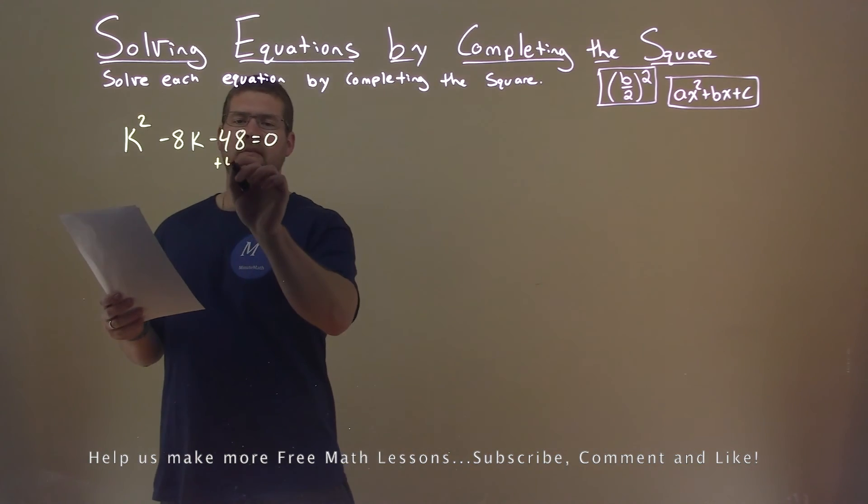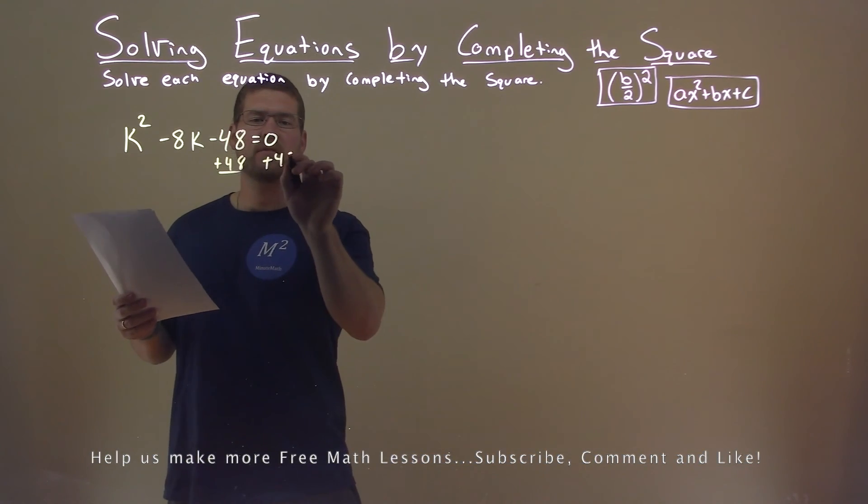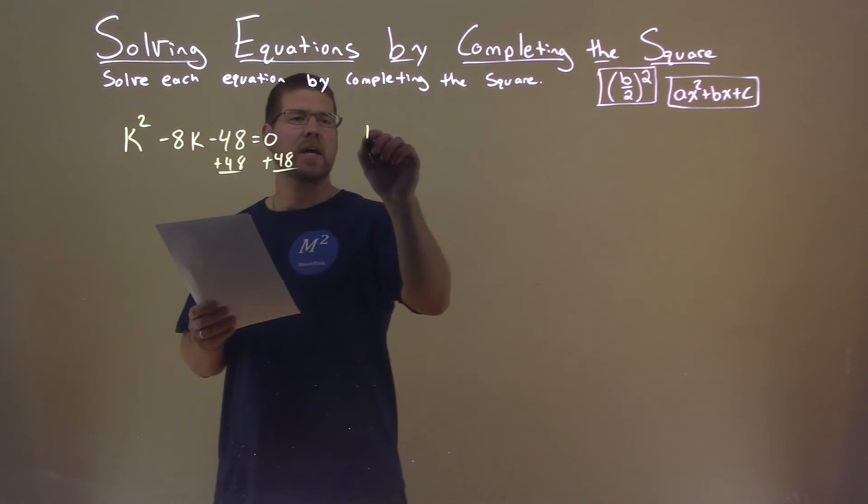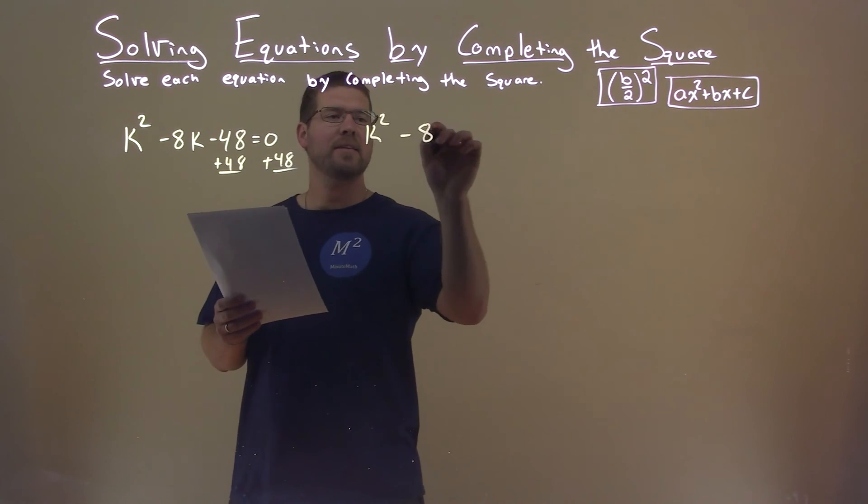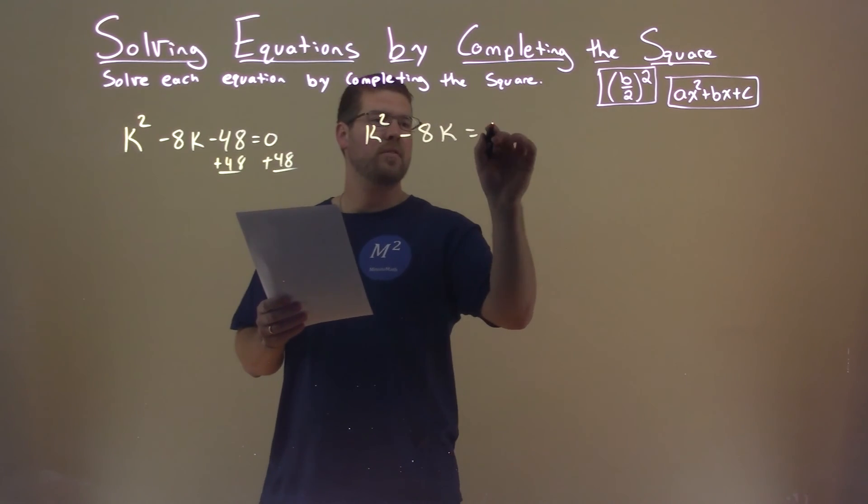First thing I want to do is add 48 to both sides of the equation. That gives us k² - 8k = 48.